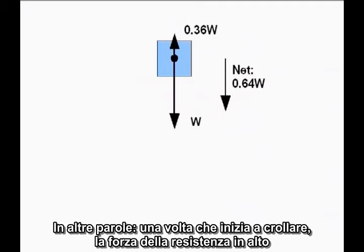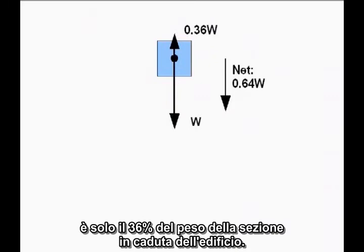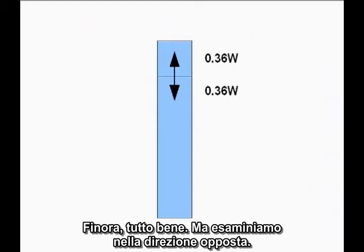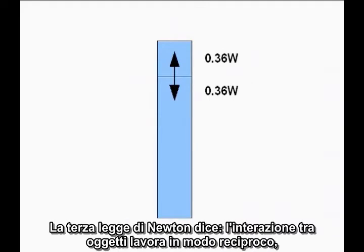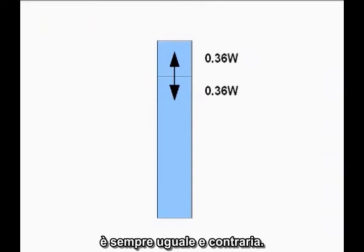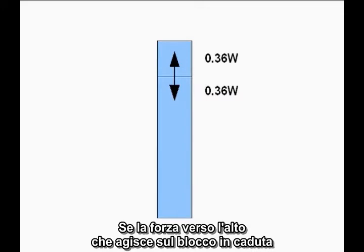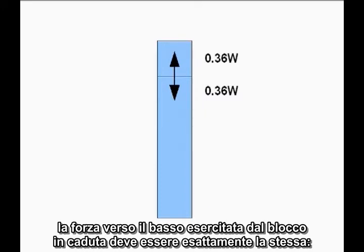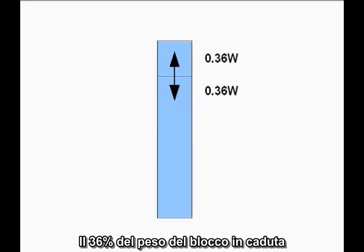In other words, once it starts falling, the upward resistive force is only 36% of the weight of the falling section of the building. Newton's Third Law says interactions between objects work both ways — the forces two objects exert on each other are always equal and opposite. So the downward force exerted by the falling block must be exactly the same: 36% of the weight of the falling block.